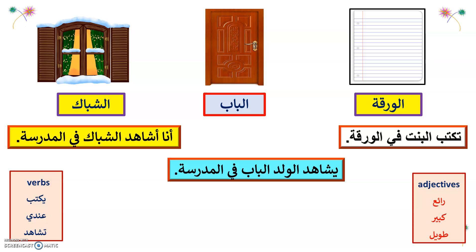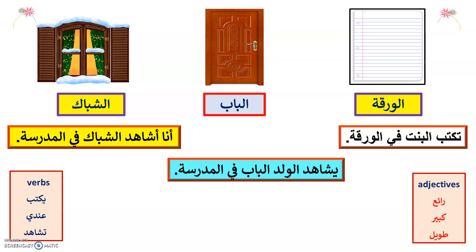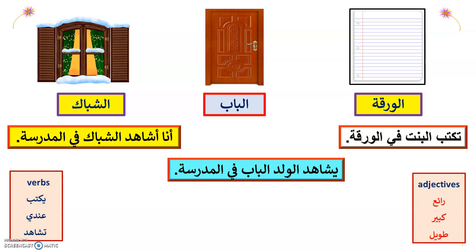You can also use adjectives with paper. For example: Ana aktub ala waraka jamila — I write on a beautiful paper. You can also use colors like lawno abyad (white), lawno bunni (brown), or lawno ahmar (red). Use the color in your sentences.